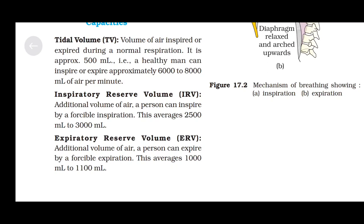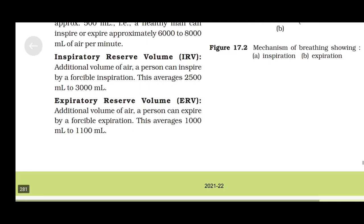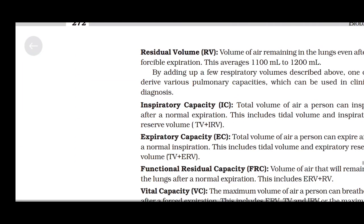Inspiratory Reserve Volume (IRV): The additional volume of air a person can inspire by a forcible inspiration. This averages 2500 ml to 3000 ml. Expiratory Reserve Volume (ERV): The additional volume of air a person can expire by a forcible expiration. This averages 1000 ml to 1100 ml.